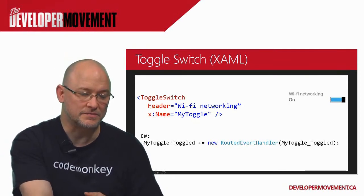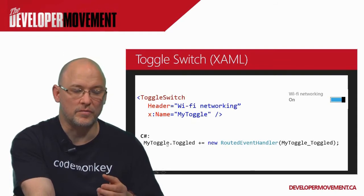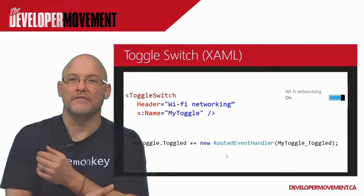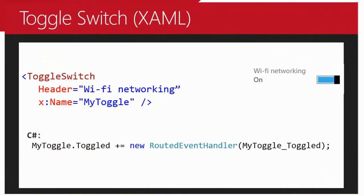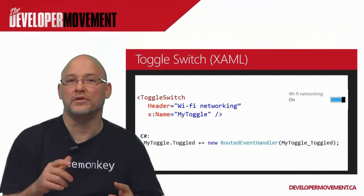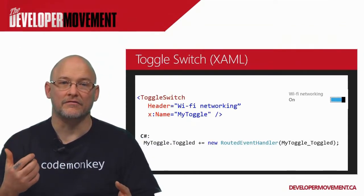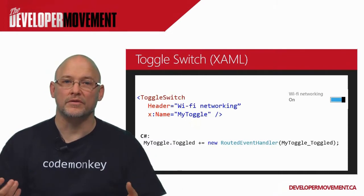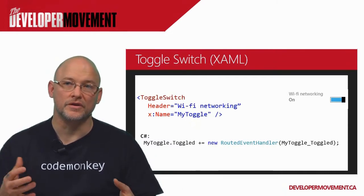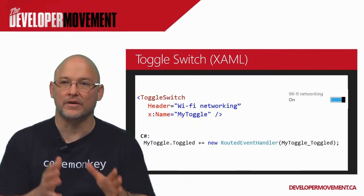In C# in your code behind, all you have to do is add a new event handler and you can trap for when it's been toggled on or off, doing something at the time it's been toggled, or referencing the actual value of the toggle switch. You can also bind to the value of the toggle switch to use it in an MVVM situation, getting your information directly out to your view model so that you're not utilizing it right in the code behind.